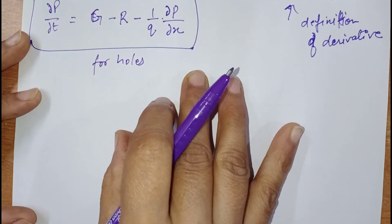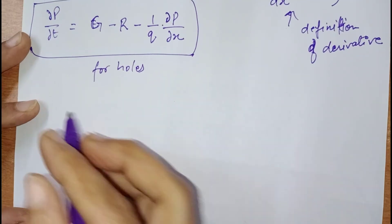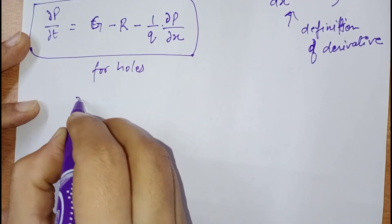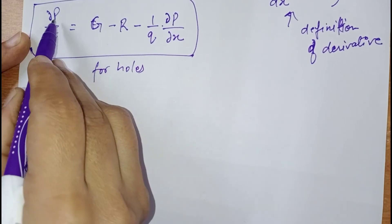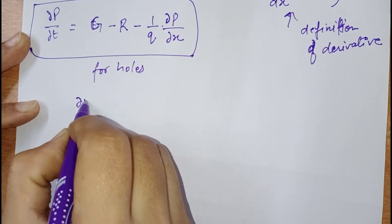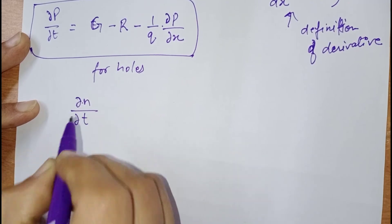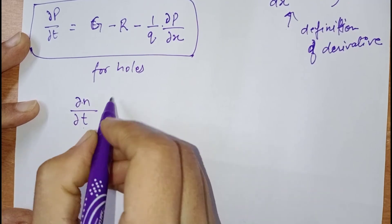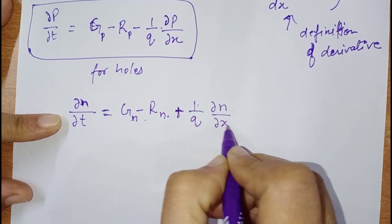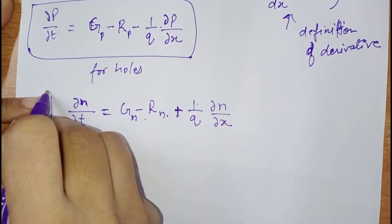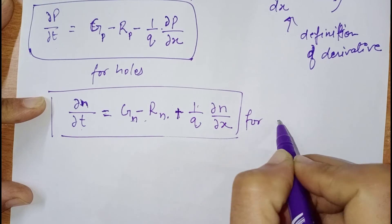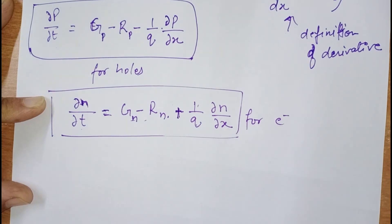Similarly, we can write the continuity equation for electrons by replacing hole concentration p with electron concentration n. This becomes: ∂n/∂t = generation − recombination + (1/q)·(∂jn/∂x). This is the continuity equation for electrons.